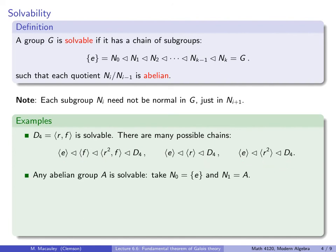Any abelian group is trivially solvable. Just take the first subgroup to be trivial and N1 to be the entire group. Obviously this is normal in that, and the quotient is trivially abelian because the group is abelian.